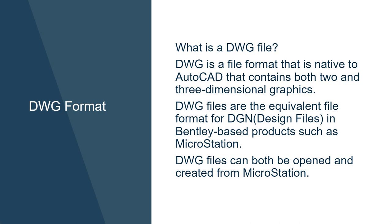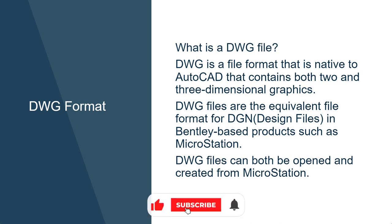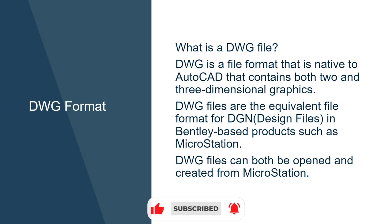What is a DWG file? A DWG file is a format that is native to AutoCAD that contains both two- and three-dimensional graphics. DWG files are the equivalent file format for DGN, or design files, in Bentley-based products such as MicroStation. DWG files can both be opened and created from MicroStation.